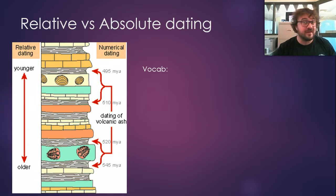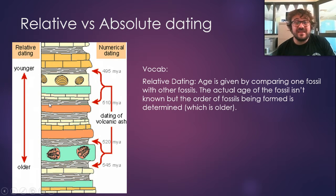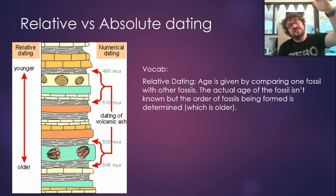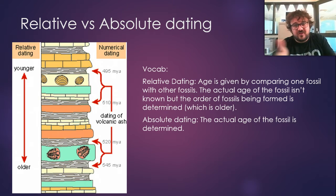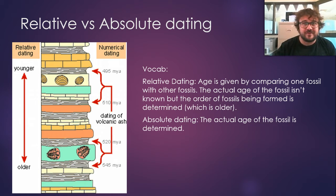Relative versus absolute dating. Relative dating — basically the age is known by comparing either a fossil or a layer of rock with other ones. The actual age isn't known, but we know the order of when they're laid down, or the order of how old things are. Absolute dating is where we know the actual age of it — we can work out within a certain degree of certainty. We're probably talking about it more accurately than we know your age. It's pretty certain. We're pretty good.